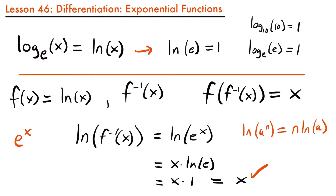This checks out — we've shown that the inverse function of the natural log is e to the x. Similarly, e to the power of the natural log of x is also equal to x. So e to the power of x is the inverse function of the natural log function.